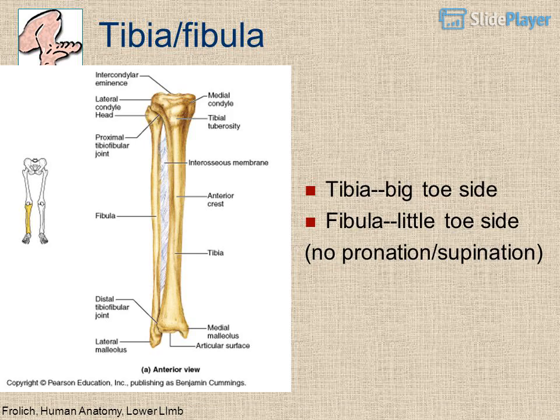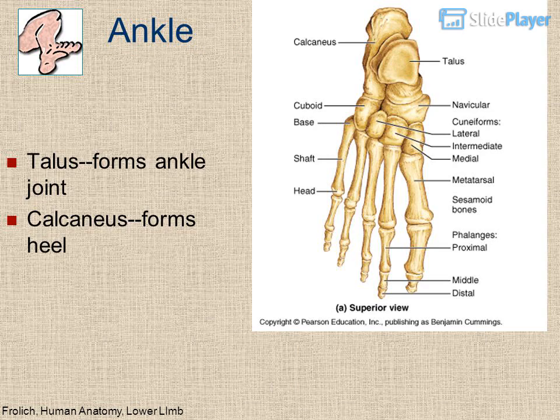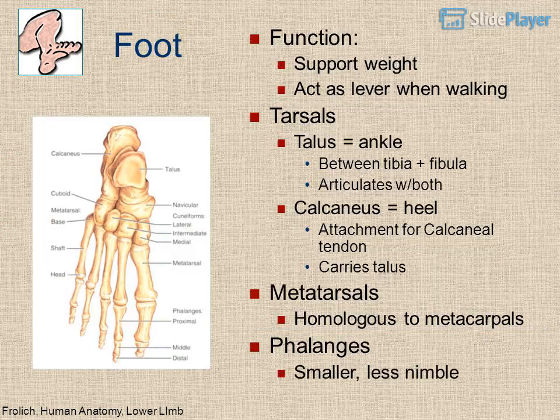The tibia is on the big toe side and the fibula is on the little toe side. There is no pronation or supination in the lower limb. The ankle consists of the talus, which forms the ankle joint, and the calcaneus, which forms the heel. The foot functions to support weight and act as a lever when walking.